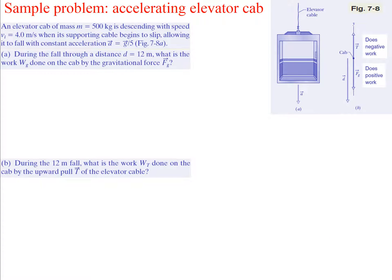An elevator cab of mass 500 kilograms is descending with an initial speed of 4.0 meters per second when its supporting cable begins to slip, allowing it to fall with a constant acceleration of g over 5, where g is 9.8 meters per second squared. During a fall through a distance of 12 meters, what is the work done on the cab by the gravitational force? We know work due to gravity is mgd cosine theta.